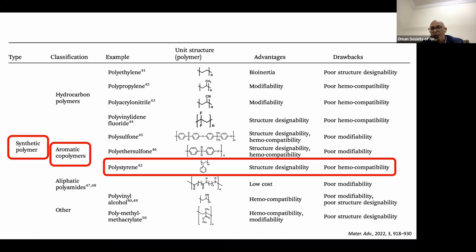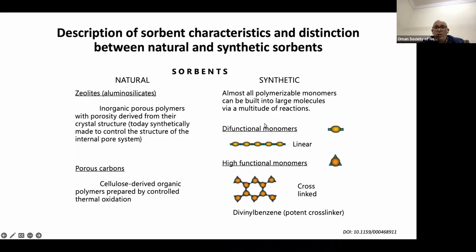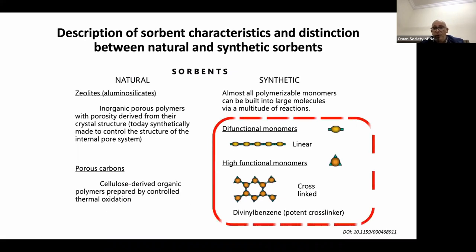Fortunately, the company addressed hemocompatibility by applying a coating on their polystyrene structure. Additionally, they used divinylbenzene, which creates a potent cross-link with a multitude of reactions that helps increase the surface area available for adsorption — specifically the styrene-divinylbenzene copolymer (HA130 from Jafron Biomedical).